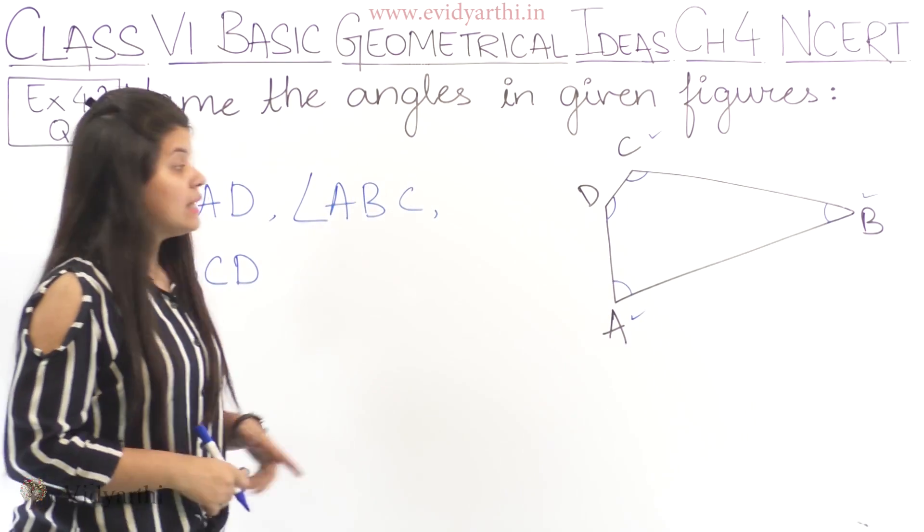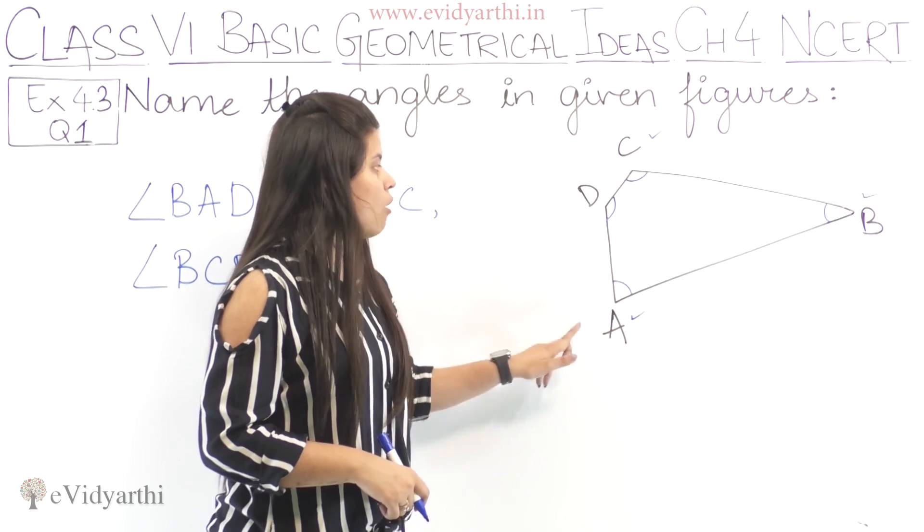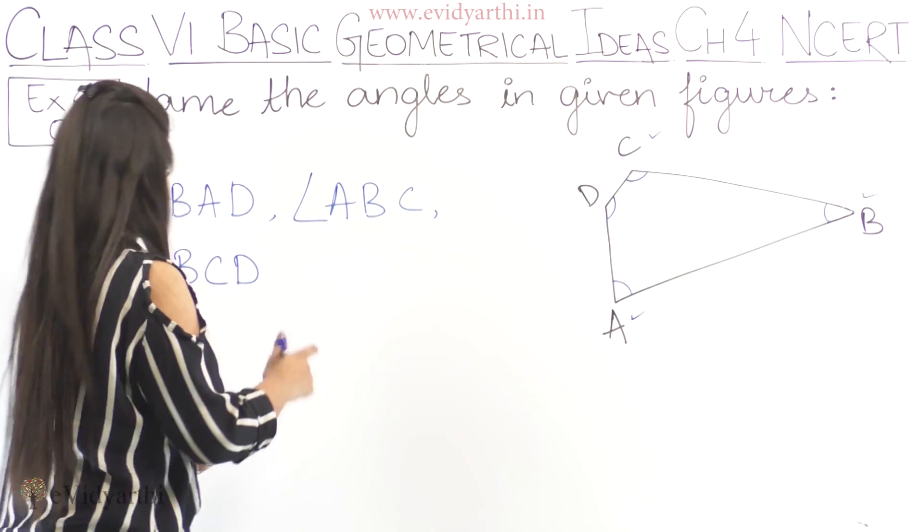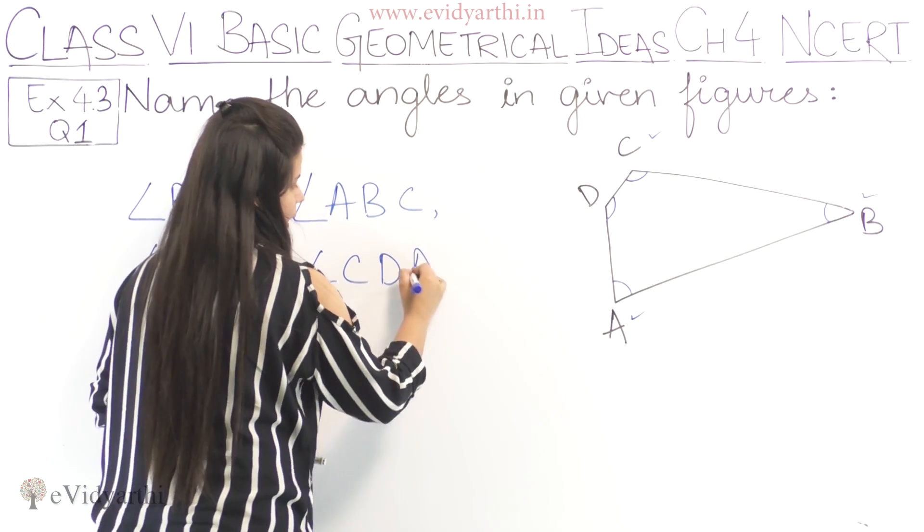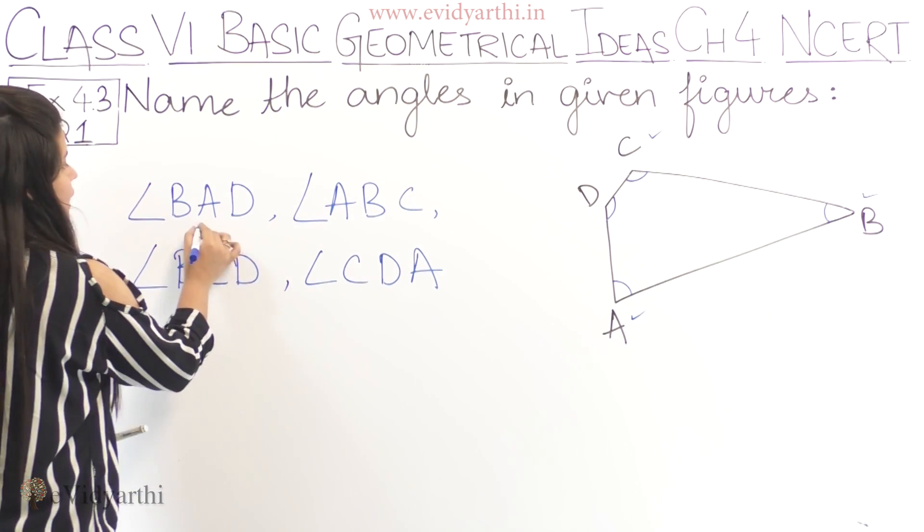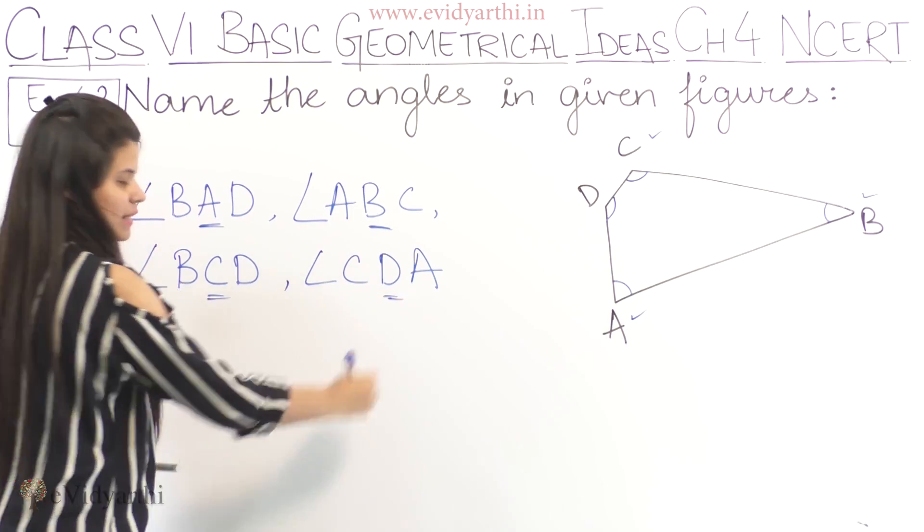Last is angle D. Angle D can be written as C, D, A or A, D, C. So let's write it as C, D, A. Here we have four angles, and we've mentioned all four angles.